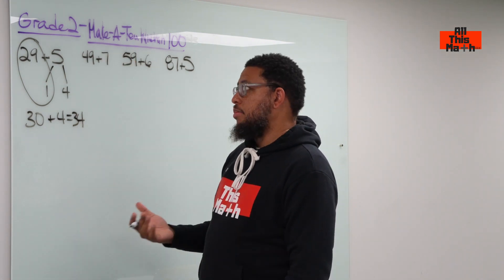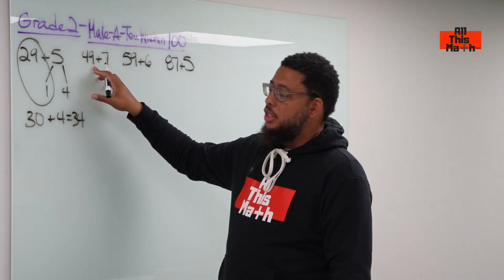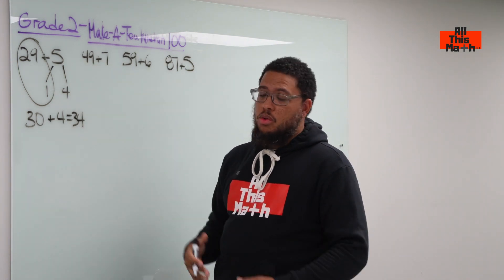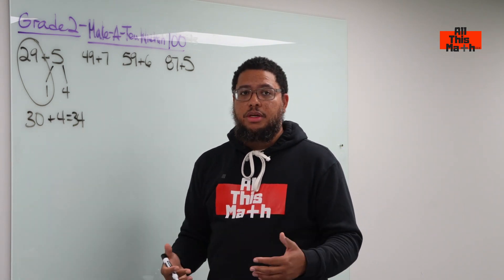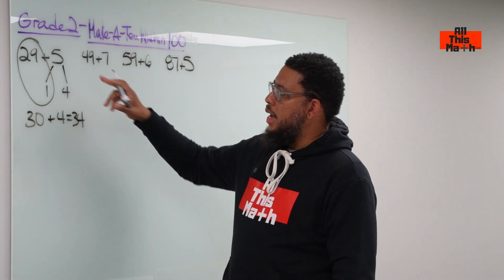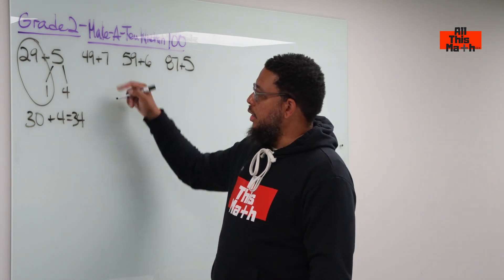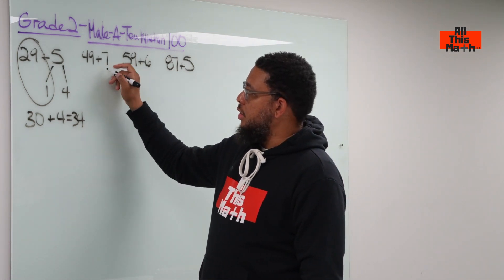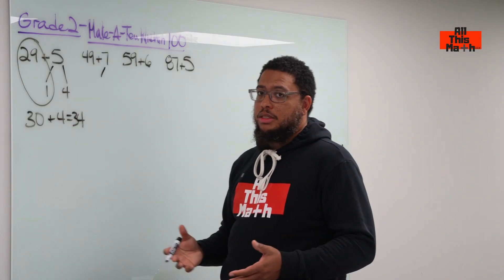Let's go to the next example, 49 plus 7. Similar situation. We have a two-digit number that has a 9 in the 1s place. We want to make a 10 or a multiple of 10. The closest multiple of 10 to 49 is 50. So I need to add 1 to 49. But again, the question, where am I going to get the 1 from? I'm going to get it from the other addend, which is 7. So I'm going to basically, I keep saying break it down. The technical term is decompose.